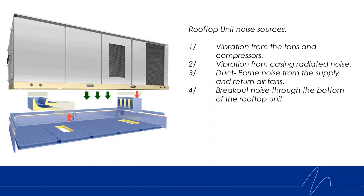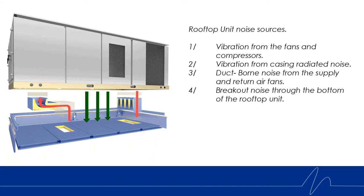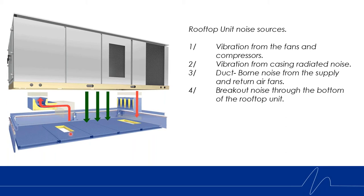When we talk about rooftop units and the noise that's created, it's especially a sensitive area for noise control. Essentially, when you have an air handling unit, it has to sit on a roof curb. That roof curb allows us to have an opening into the space below for the air to travel. Of course, if air can travel through an opening into the space from the roof, noise can also continue down that same path.